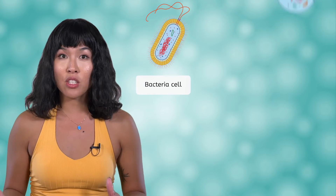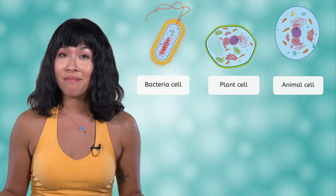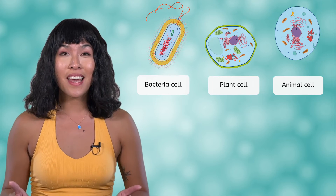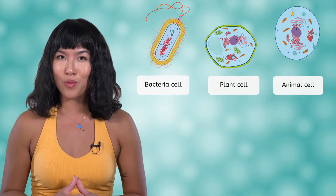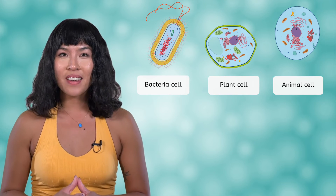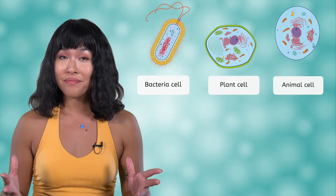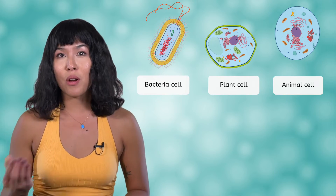We'll spend quite a bit of time in this unit comparing different types of cells. Do you see any similarities or differences between bacteria, plants, and animal cells? They are definitely different shapes, and we'll learn that they are actually very different in size as well. Notice anything about what is inside the cells? Some pieces are the same, but some are different too.